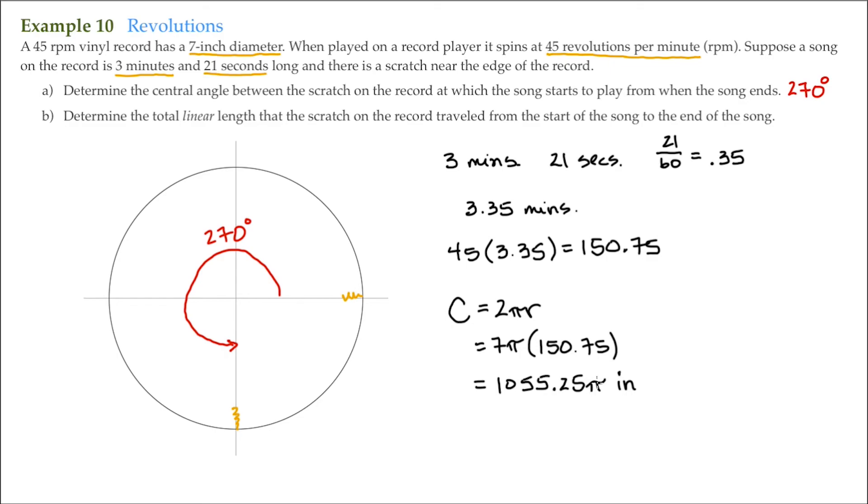Now π, since this is a distance, π is approximately equal to 3.142. So then I'm just going to multiply this by 3.142. So that's approximately 3,315.6 inches.